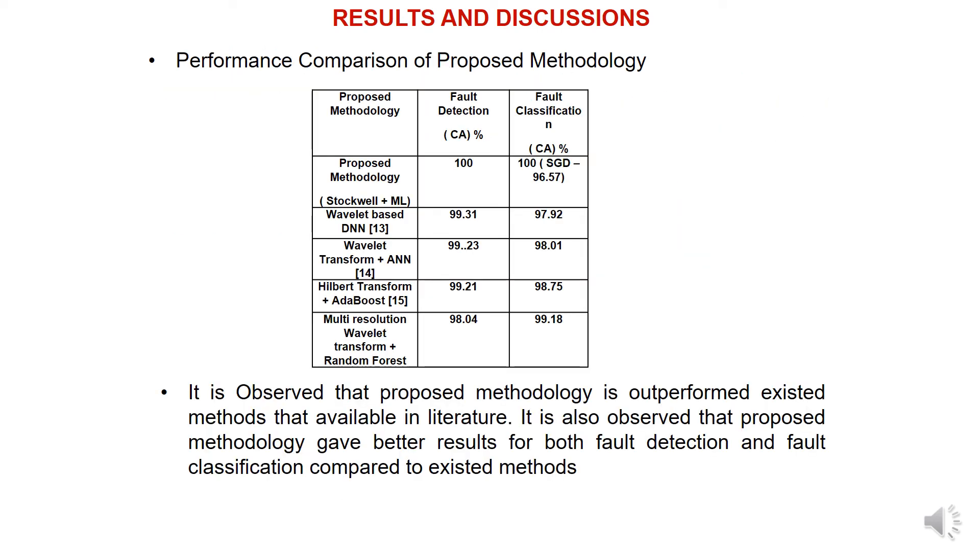We are comparing the proposed method with existing methods. The proposed method—Stockwell plus different machine learning algorithms—yields around 100% fault classification accuracy, while Stochastic Gradient Descent method gave 96.57%. We compared it with different existing methods in the literature. The proposed methodology outperformed existing methods and gave better results for both fault detection and fault classification.